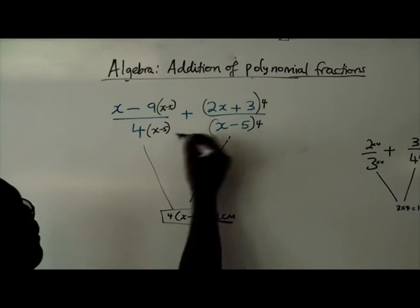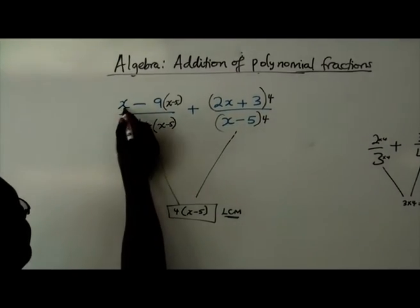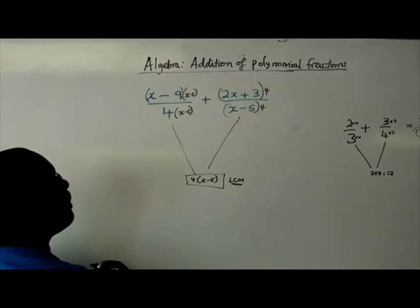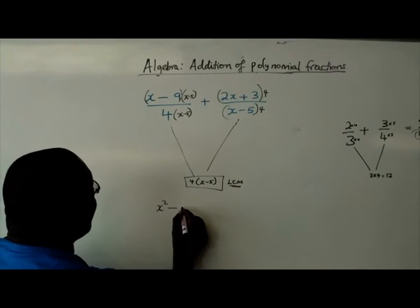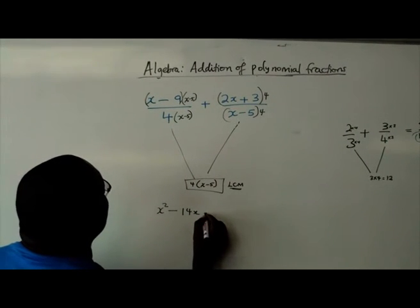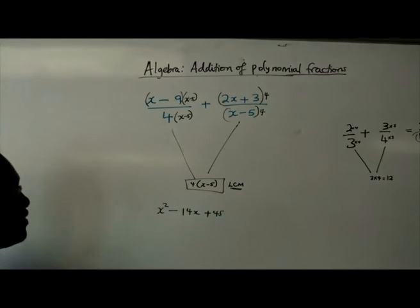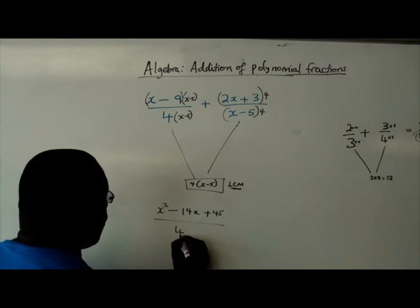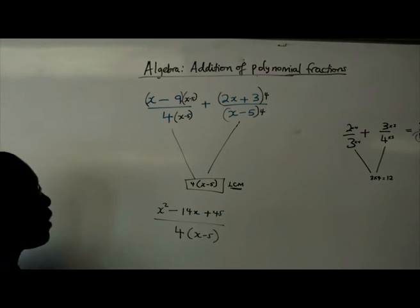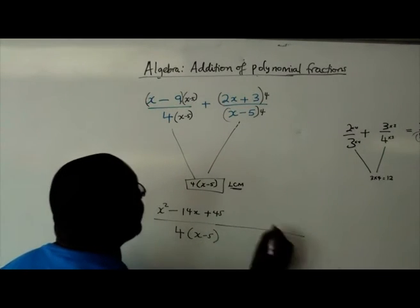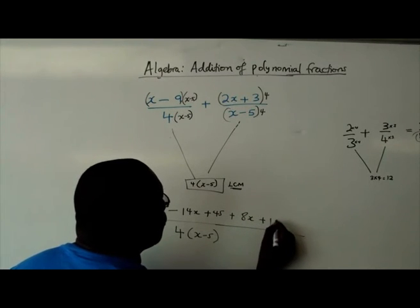We have a situation where we have x minus 9, if we put it like that, and x minus 5. So x squared minus 14x plus 45, if you do the simplification you'll get that, over 4x minus 5. But because it's the same denominator, we can put it under one denominator and take the other one as well.